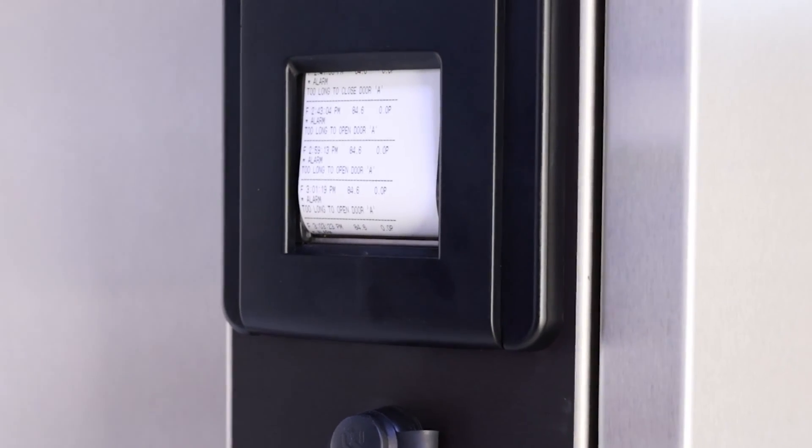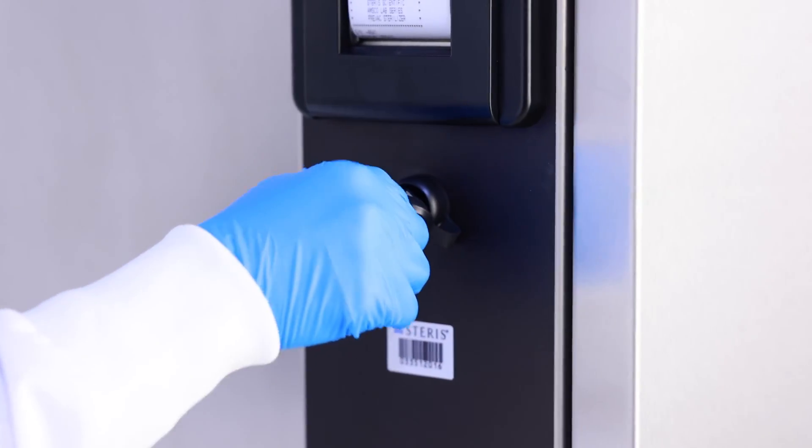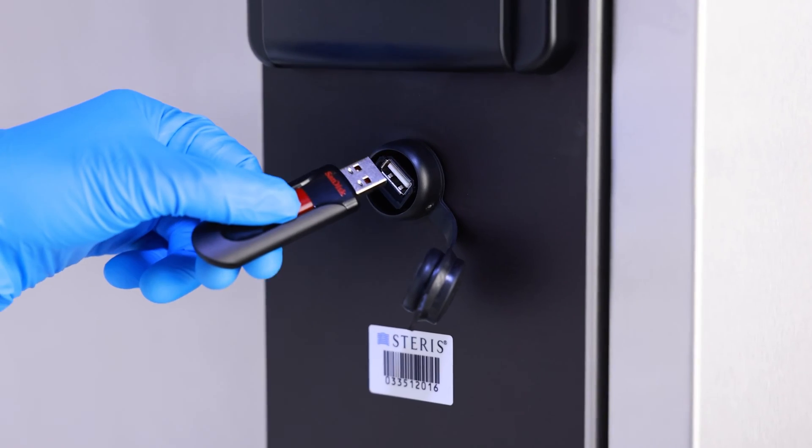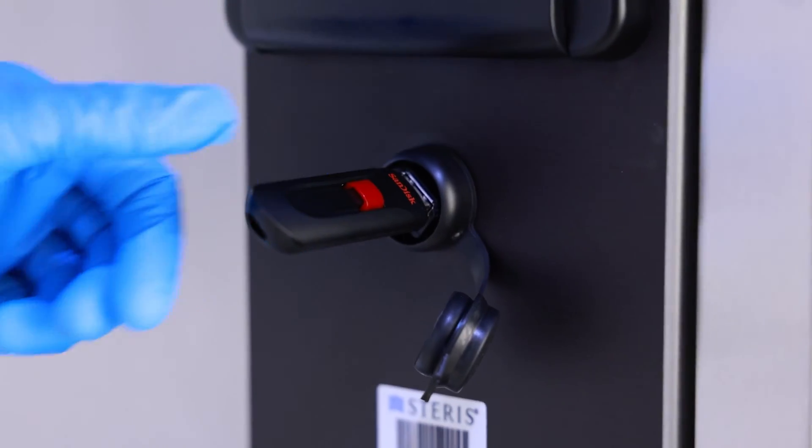Cycle data can be printed using a standard printer, electronically saved on a regular USB drive, or exported via an RS-232 port.